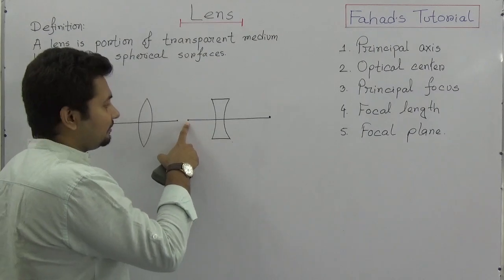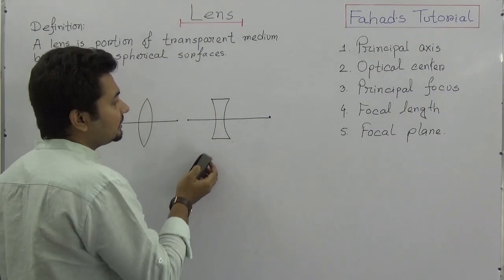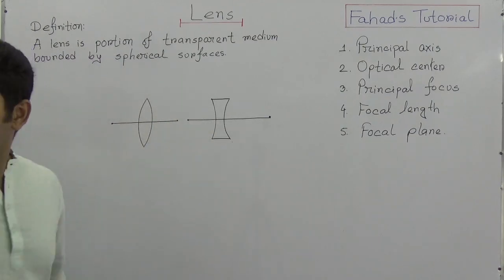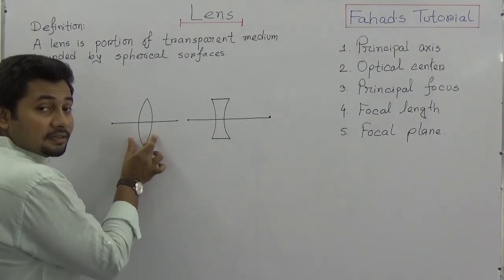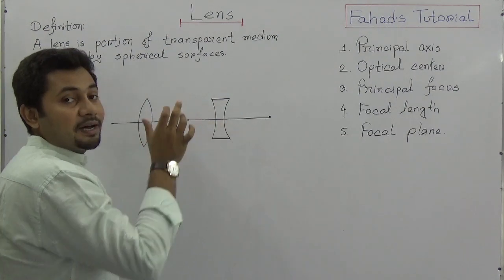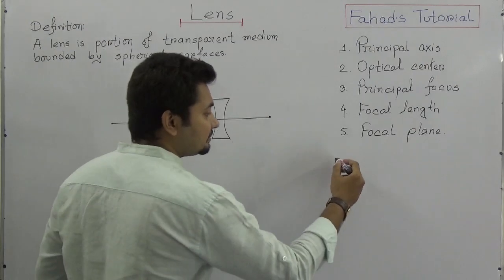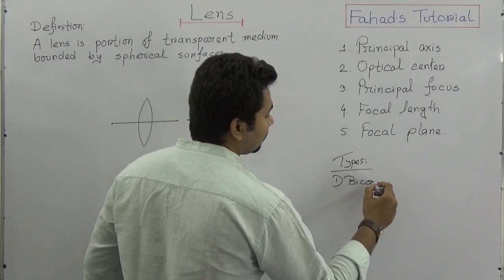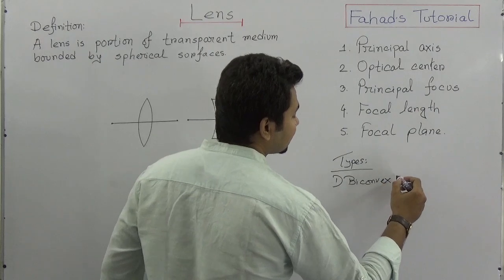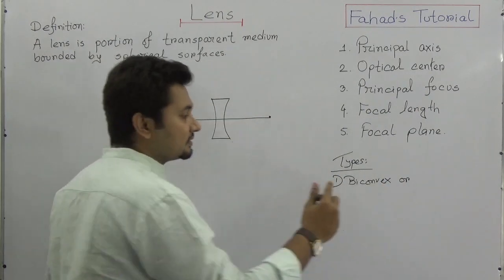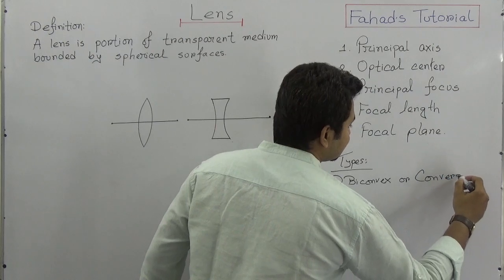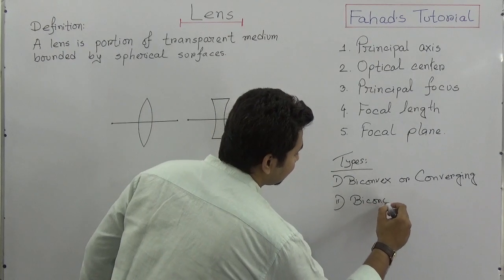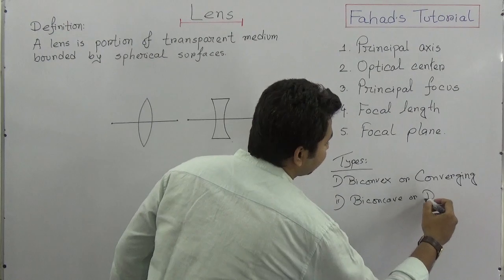The center of curvature of this sphere is here, so this is actually the center of curvature. We can now clearly see this is a biconvex lens and this is a biconcave lens. The types of lens are: number one, biconvex — also called converging lens; and number two, biconcave — also called diverging lens.